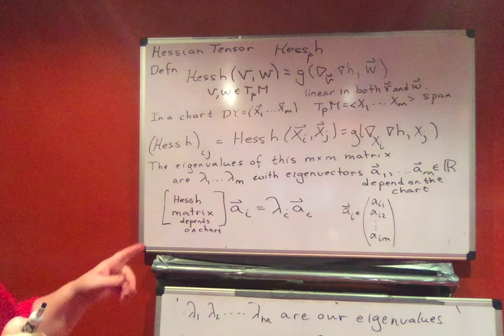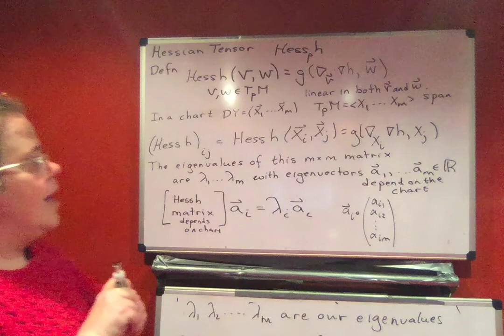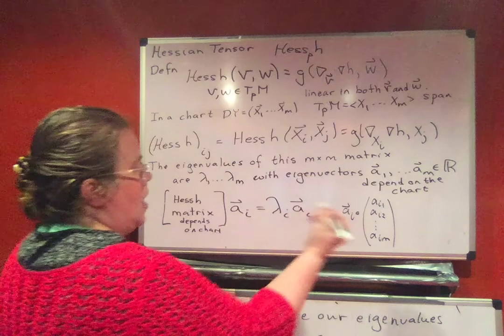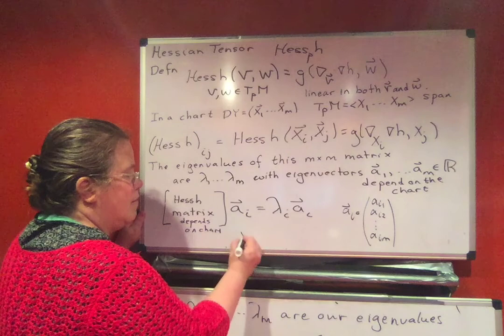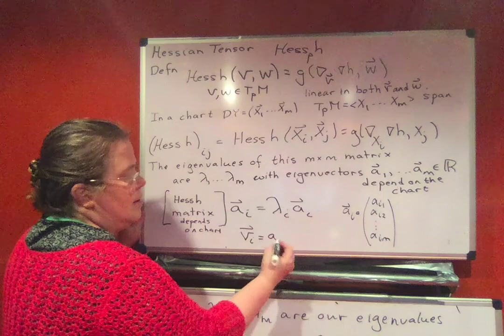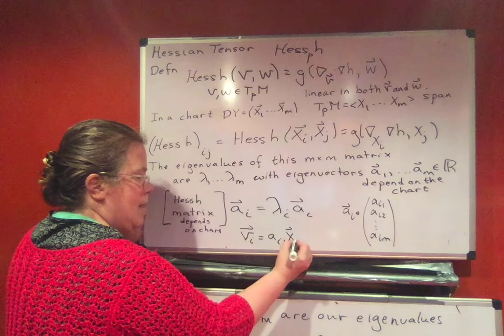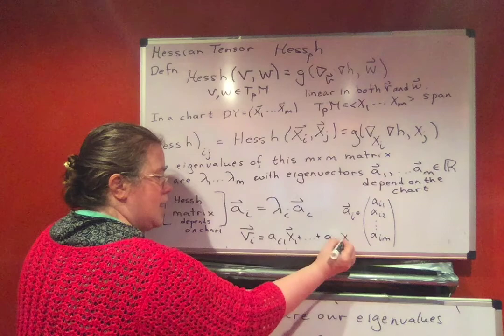Well, let's look at this. What does it mean to say H_ij sum equals lambda_i a_i is going to say that essentially I need to define a new vector. Let me define a vector v_i is going to equal a_i1 our chart x_1 plus dot dot dot plus a_im our chart x_m.